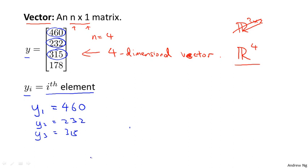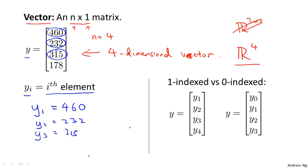Also, it turns out that there are actually two conventions for how to index into a vector. And here they are. Sometimes people will use one index and sometimes zero index vectors. So this example on the left is a one index vector...